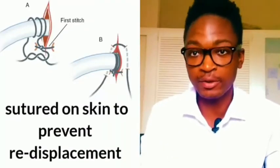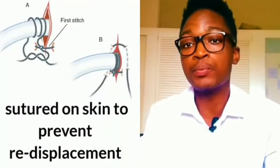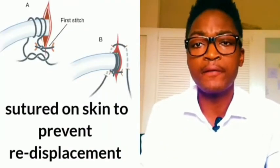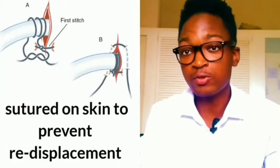By safety I mean using protective gear like gloves. When the tube is in place, it's sutured or anchored on the skin to prevent redisplacement, and an occlusive dressing is applied. The drain helps remove air or fluid from the pleural space and facilitate expansion of the collapsed lung.